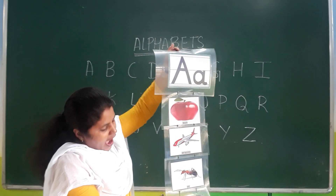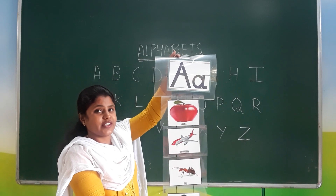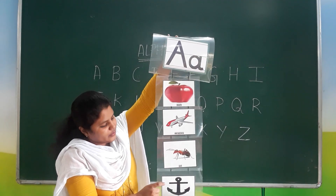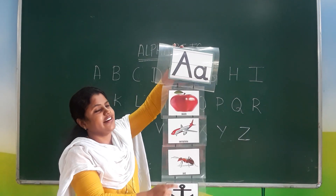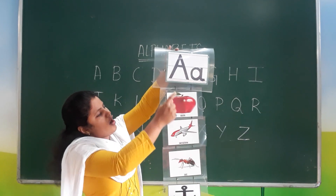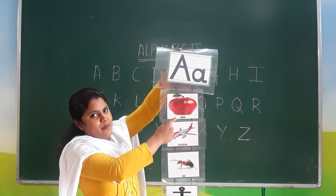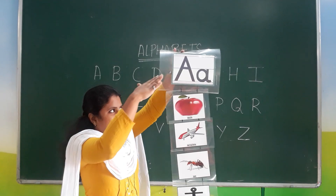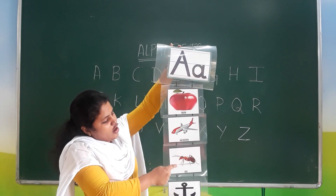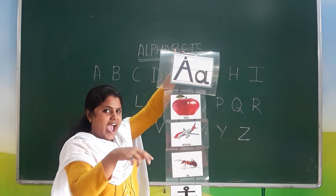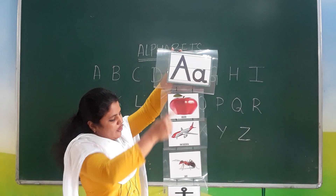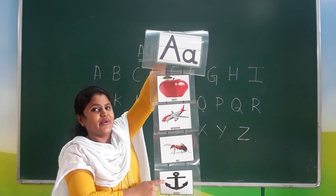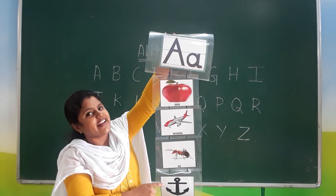Then A for anchor. What is this? Anchor. A for apple, A for aeroplane, A for ant, and A for anchor. What is this? Anchor.